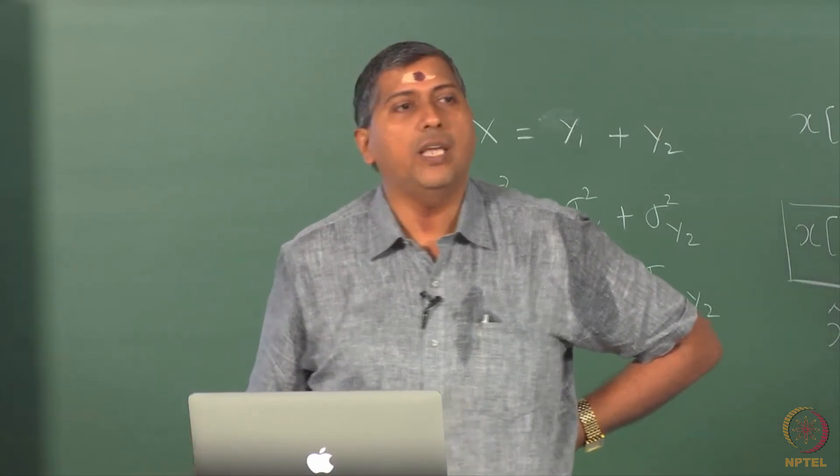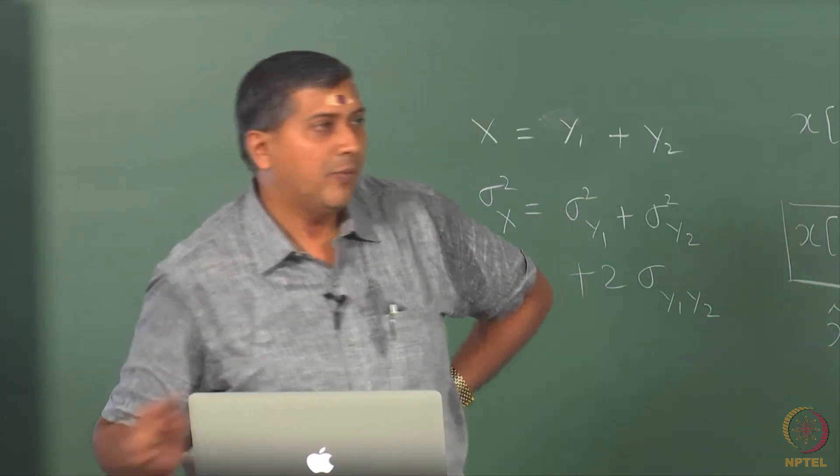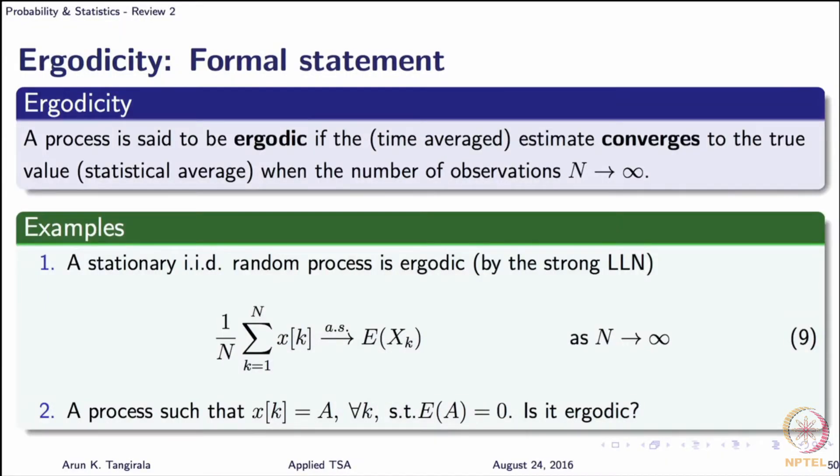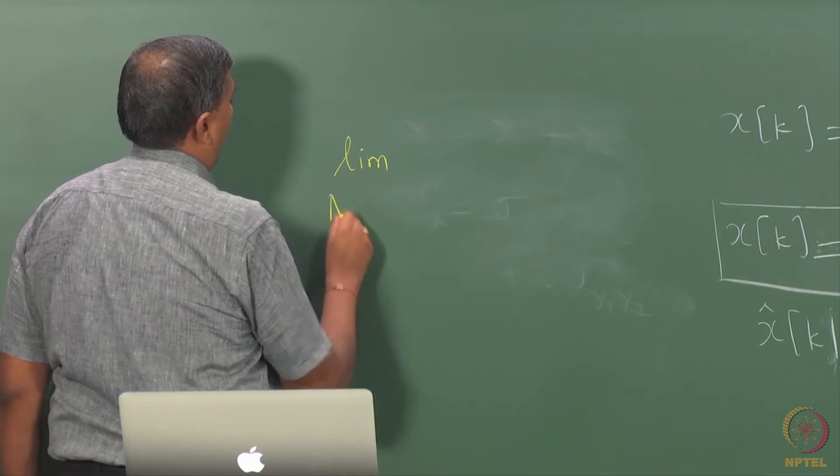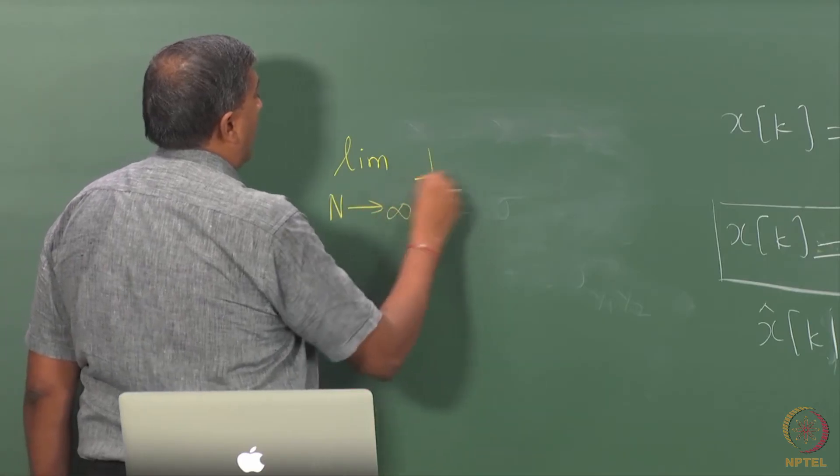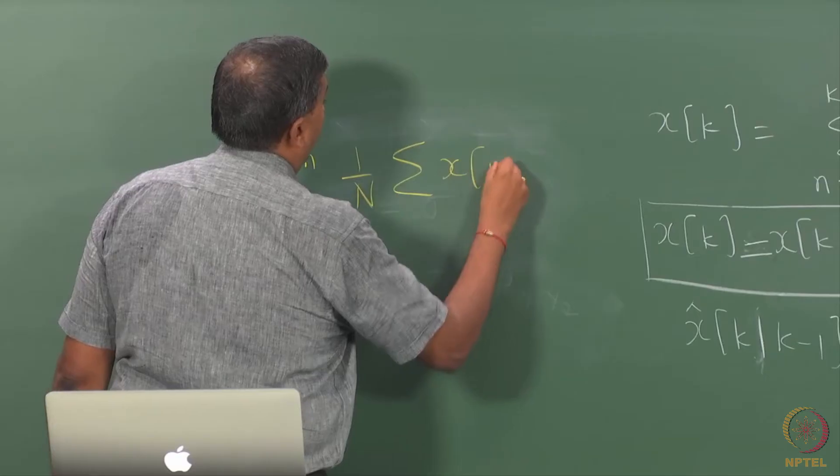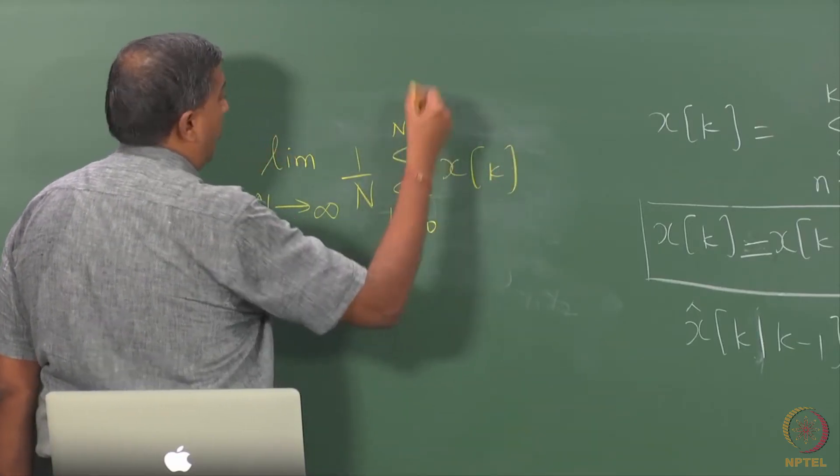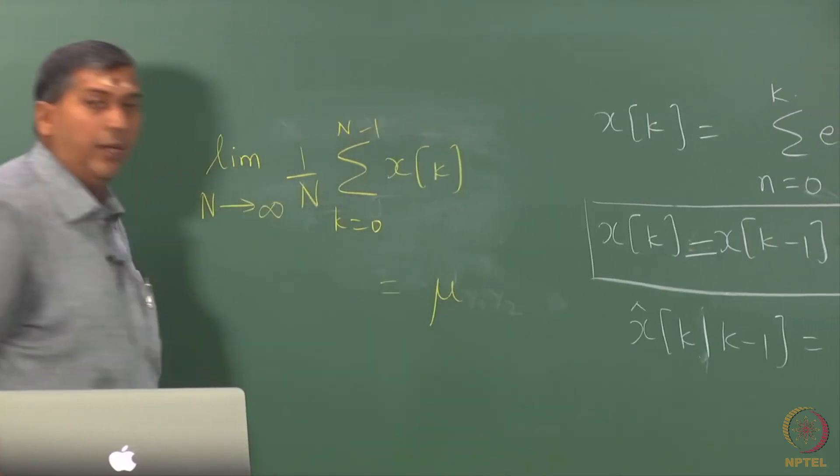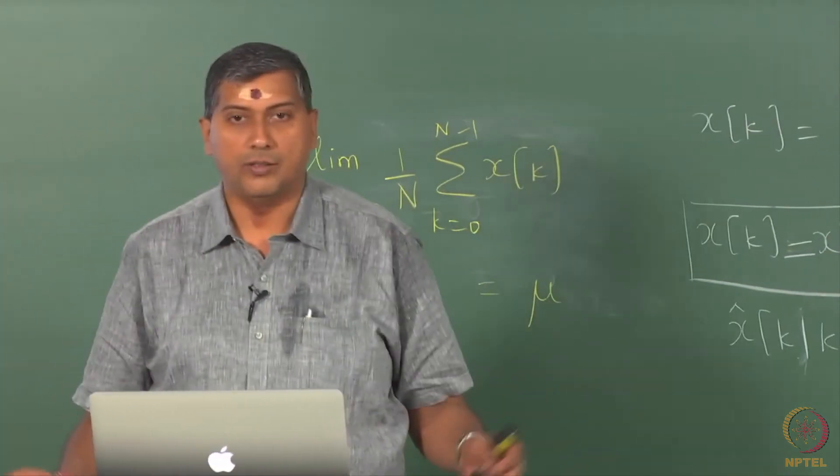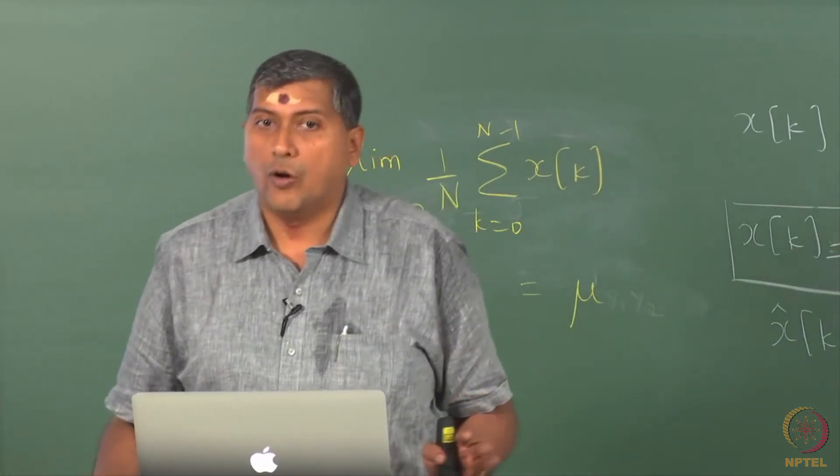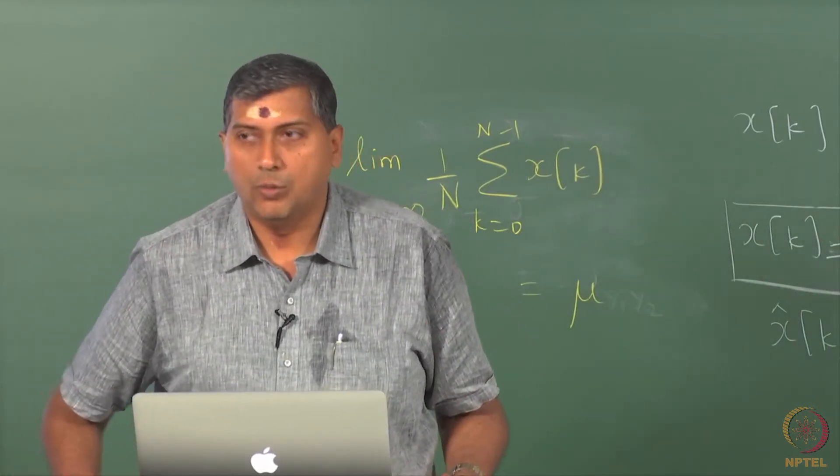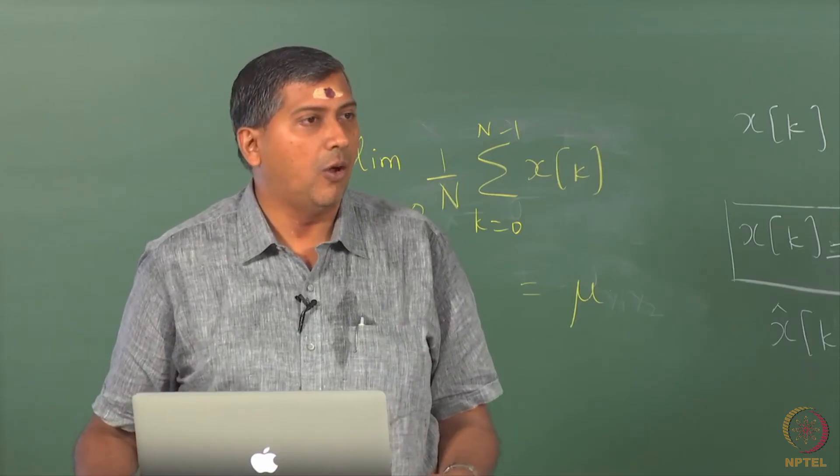One has to essentially show that in the limit as n goes to infinity, this 1 over n sigma xk is mu, where mu is the mean of the process. It is not so straightforward to show that this is true. This is of course known by the law of large numbers. There are 2 versions of law of large numbers, weak law and strong law, based on the assumptions that you make of the process.